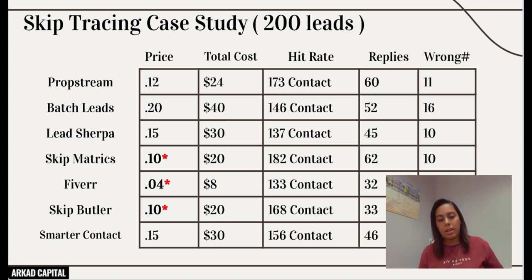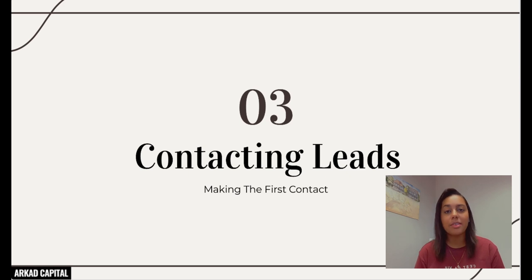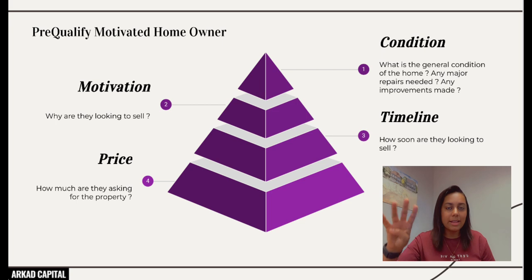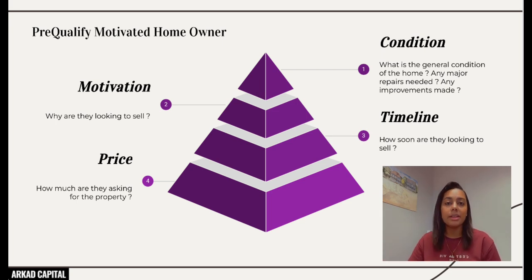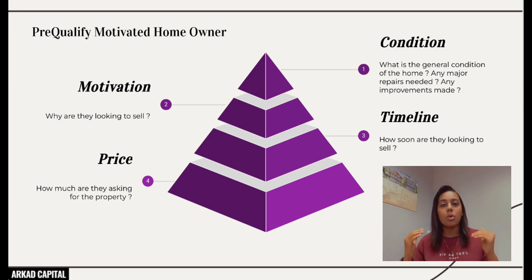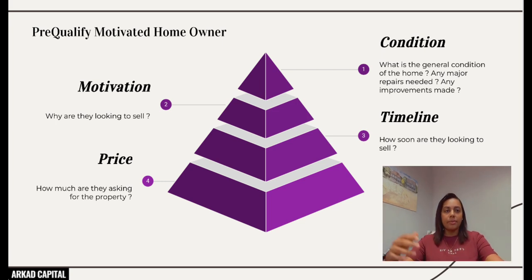Now for contacting leads — where the fun begins. We need to pre-qualify a motivated homeowner using four key things. These are the same things I tell my virtual assistants and interns: you need to figure out these four things before sending a lead to me. Number one is the condition of the property.